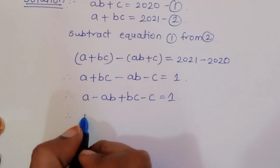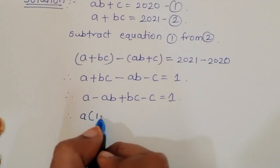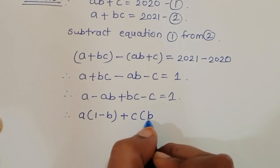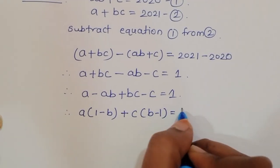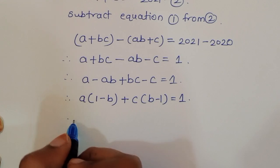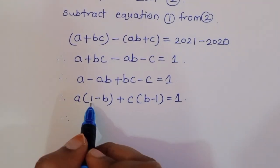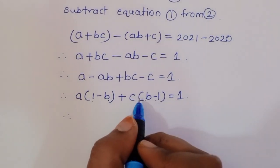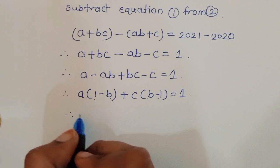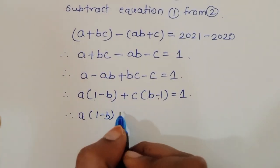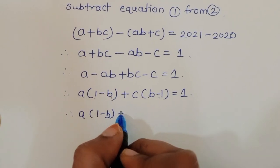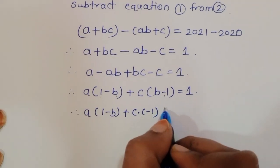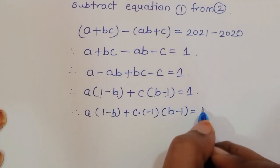By rearranging this term, a minus ab plus bc minus c = 1. Taking a common from the first two terms: a(1 minus b), and taking c common from the last two terms: c(b minus 1), equals 1.